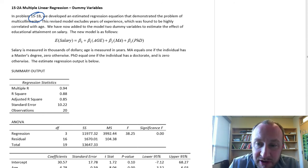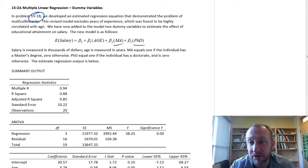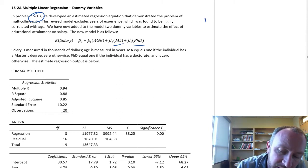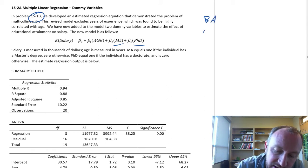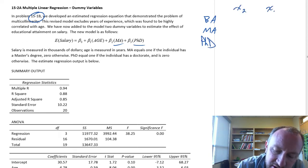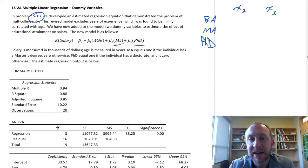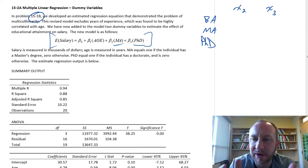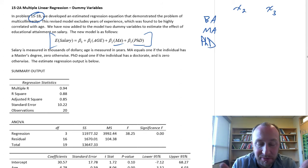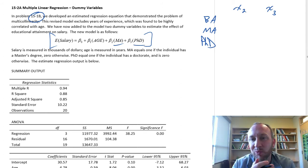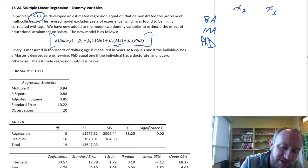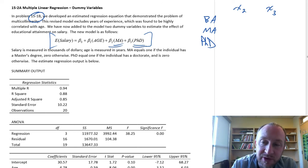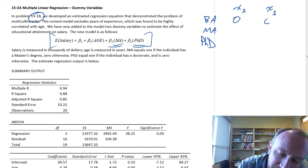I have two dummy variables here — Masters and PhD — because I have three levels within this category: Bachelor's degree, Master's degree, and PhD. x2 and x3 are the two dummy variables. When students look at this equation, they'll ask why there's no Bachelor's degree in there. Well, Bachelor's degree is implicit in this model. It's what we call our base case — the one against which the other two values are compared. As the base case, both dummies take on the value zero.